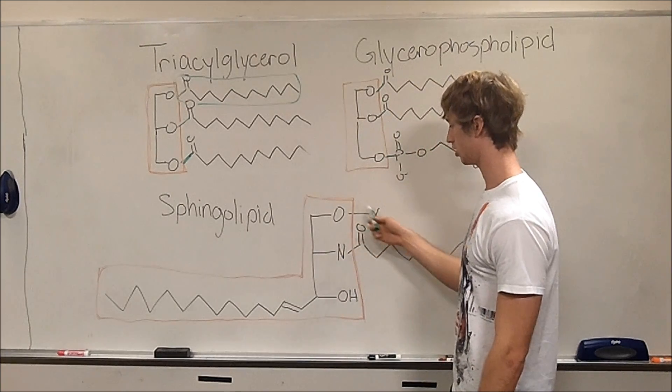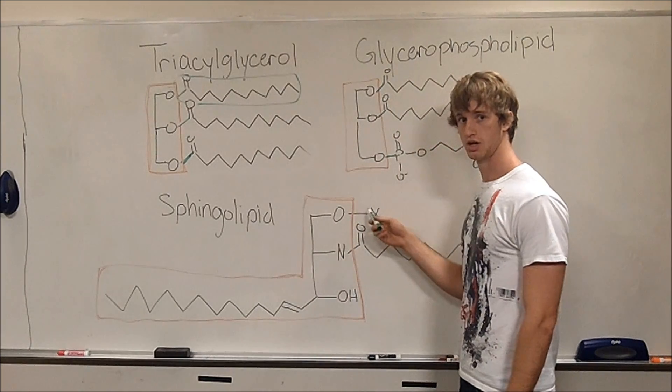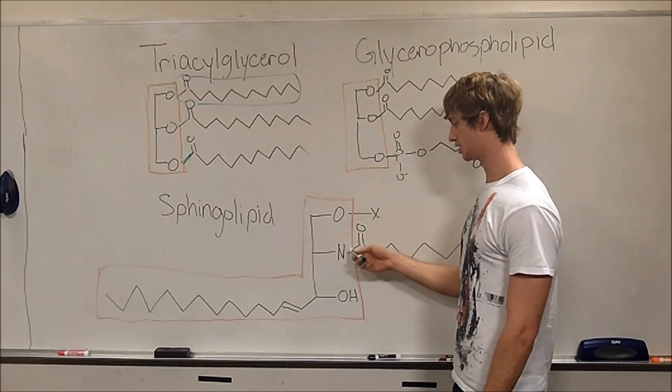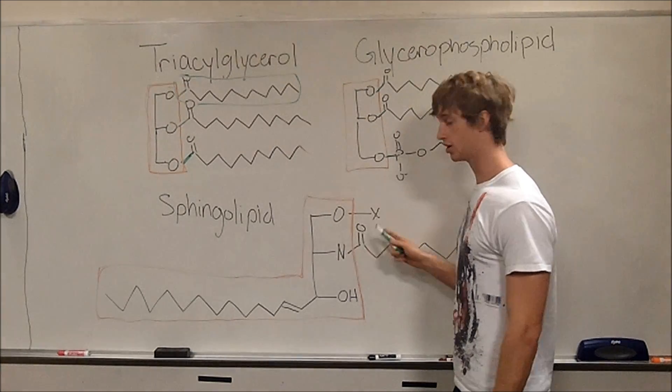And at position one, or at C1, it has some kind of moiety as well. Now, at C2, we have this nitrogen group, but here is the fatty acid.